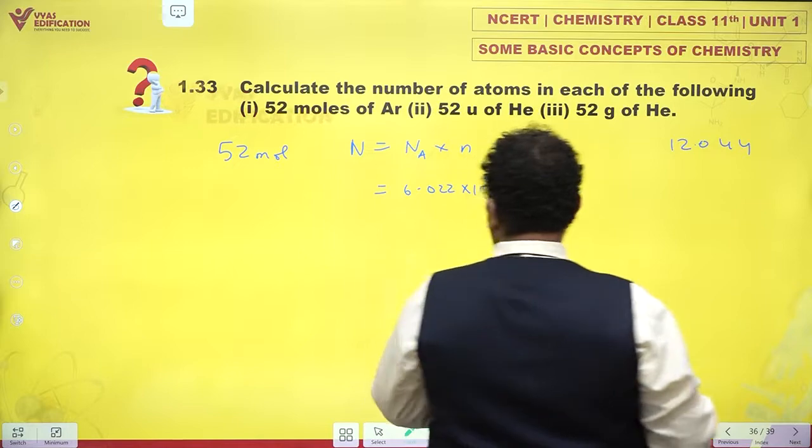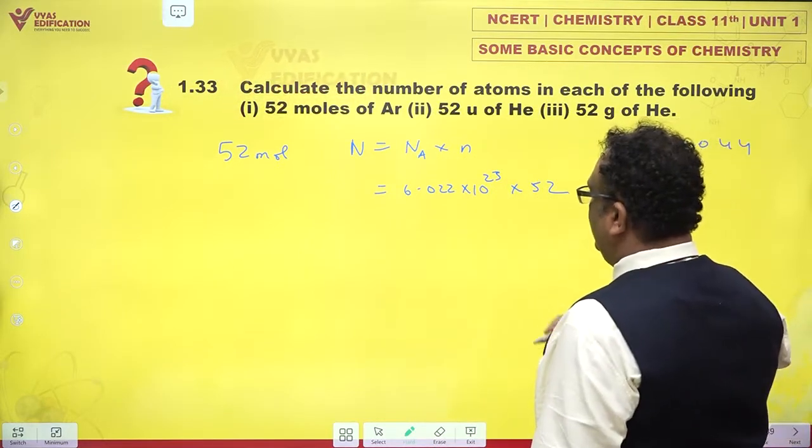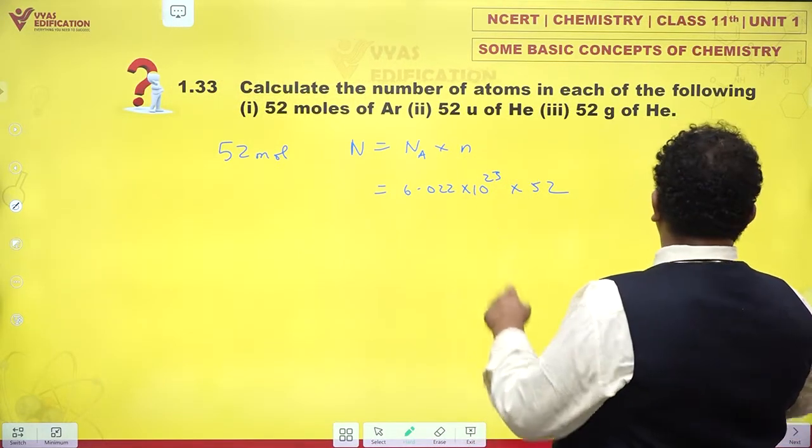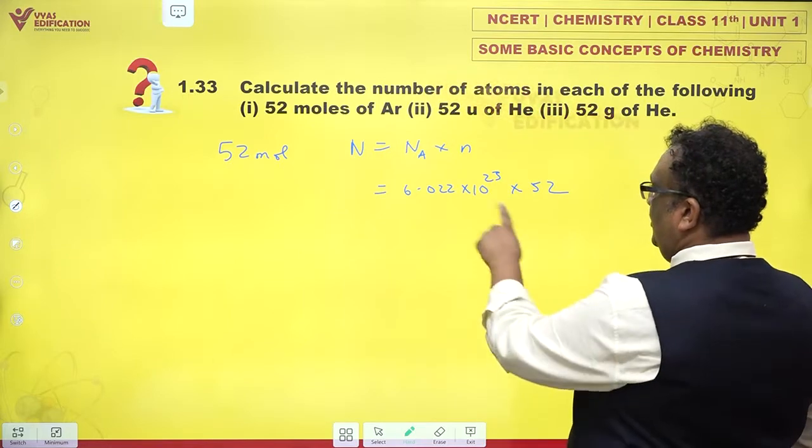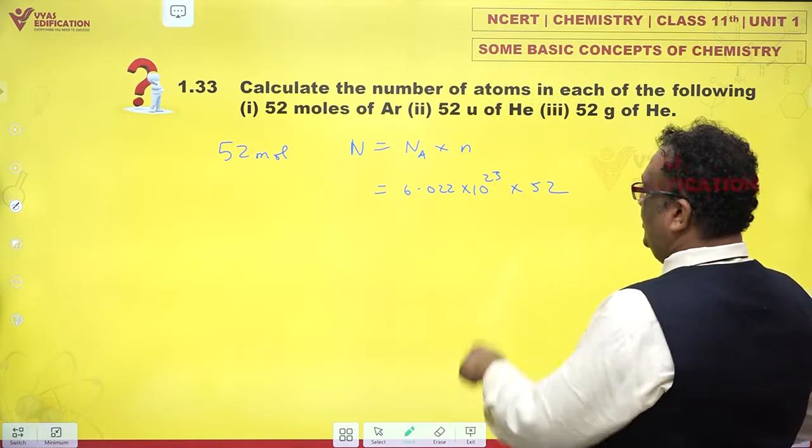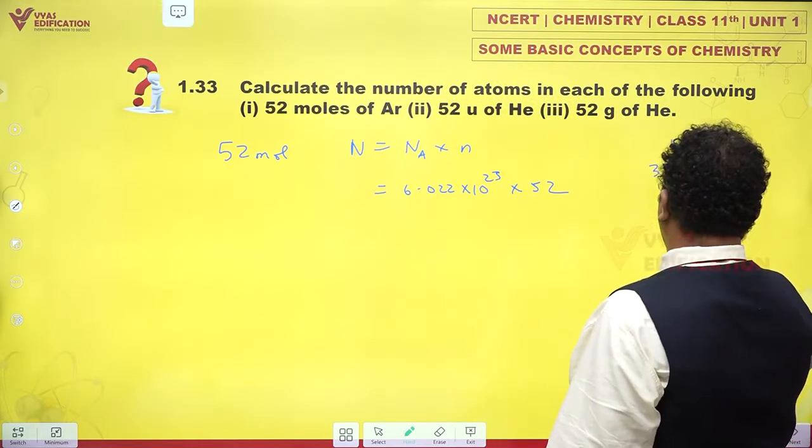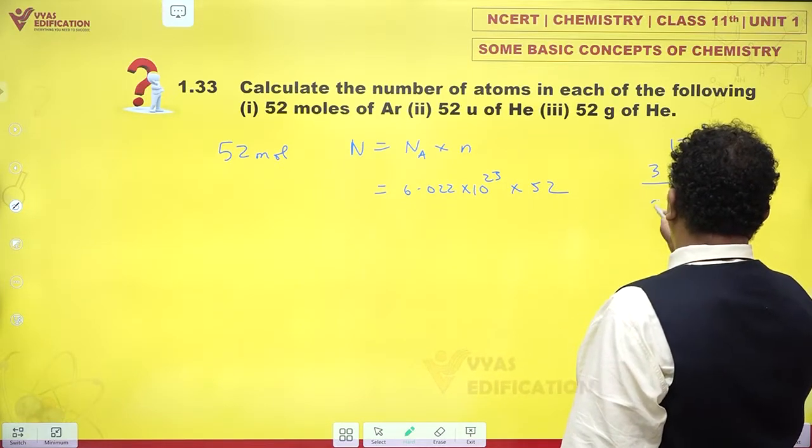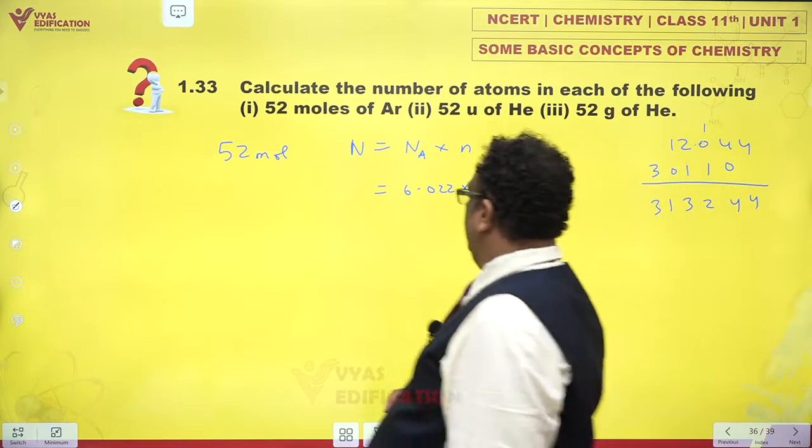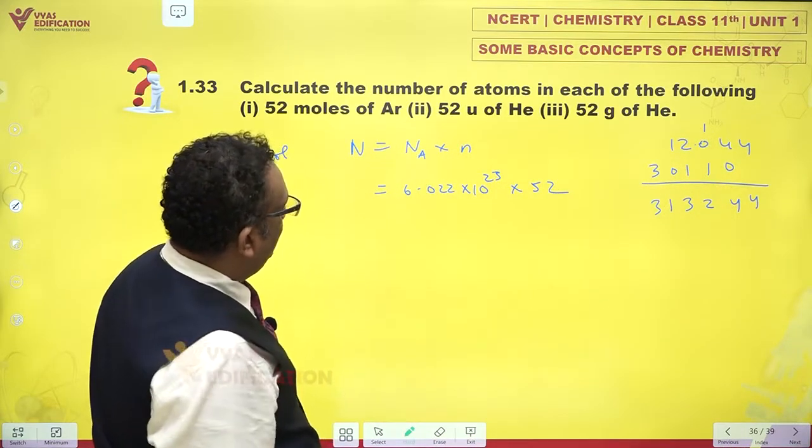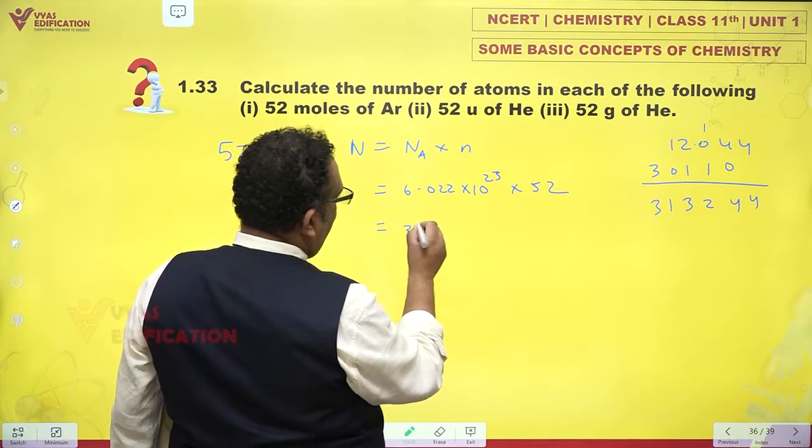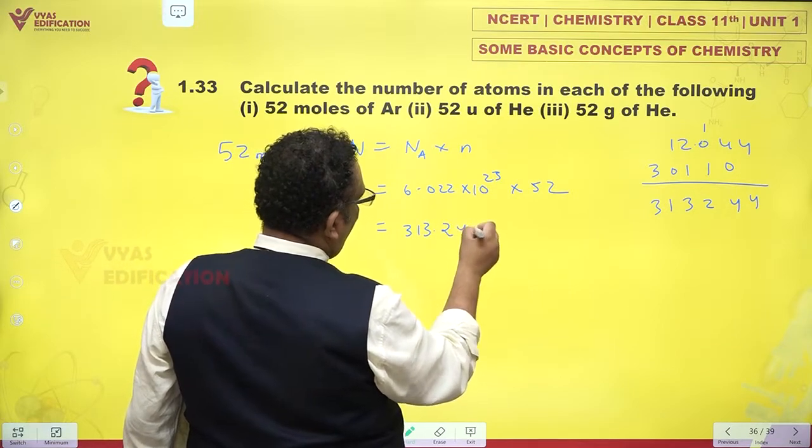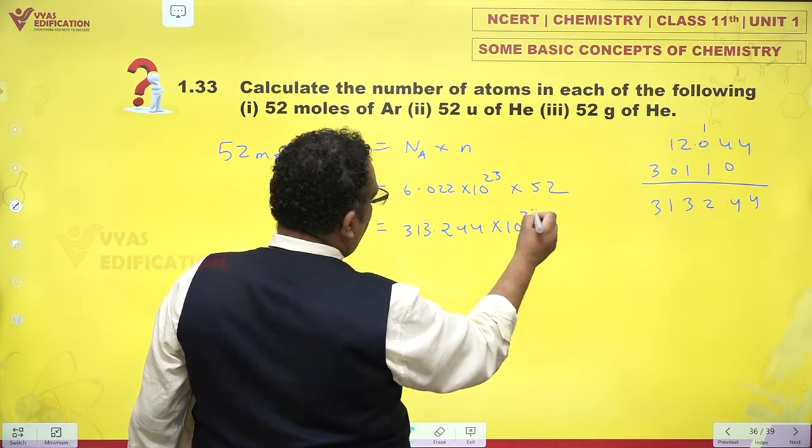12.044, and if I multiply by 5, 5 times 2 is 10, 5 times 6 is 30... 313.244 × 10^23 atoms.